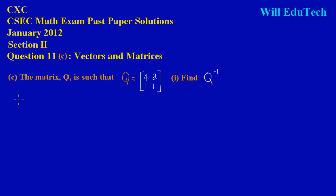Now this is pretty easy when finding the inverse of a matrix. Let's just write the matrix Q. We have 4, 2, 1, 1.